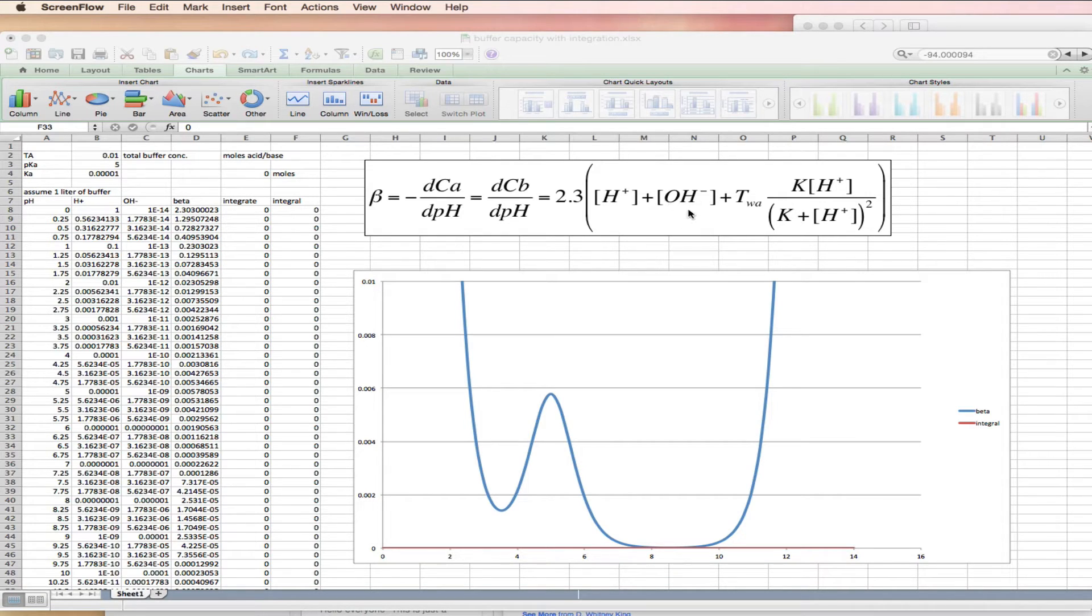Similarly, basic solutions, let's say 0.01 molar sodium hydroxide, which would be pH 12, turns out to be a pretty good buffer, plus any weak acid that you add in the form of a buffer.